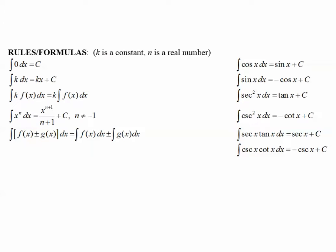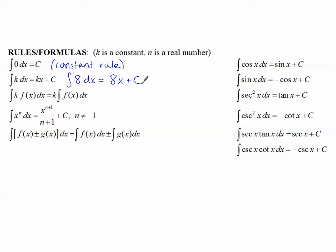Let's look at rules and formulas that help us take the anti-derivative. In these rules, k is a constant and n is a real number. The constant rule: the integral of zero with respect to x gives a constant c. The integral of a constant k with respect to x gives k times x plus c. For example, the integral of 8 with respect to x is 8x plus c, because the derivative of 8x is 8 and the derivative of c is zero.